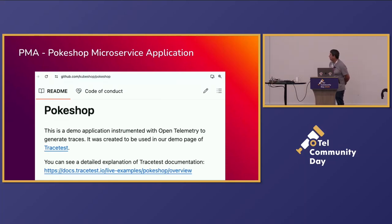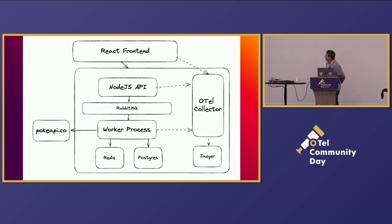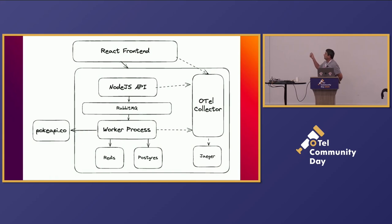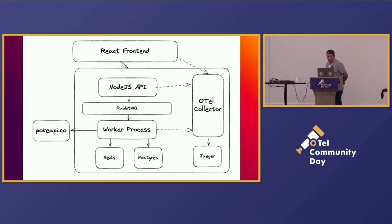The application we're going to be using is publicly available. It's a Node.js app with a React front-end. It's got two services — really an API that doesn't do anything but receives the request, verifies it, throws it on a message bus, returns a 200, and then there's an async process that does the real work. It reaches out to an external vendor — first it checks the cache, if it gets a cache miss it reads from PokeAPI, and then it writes the cache and writes the database.